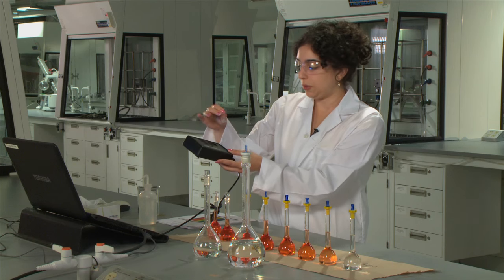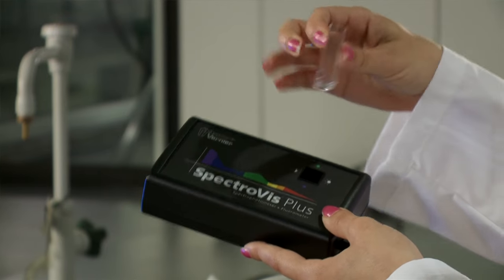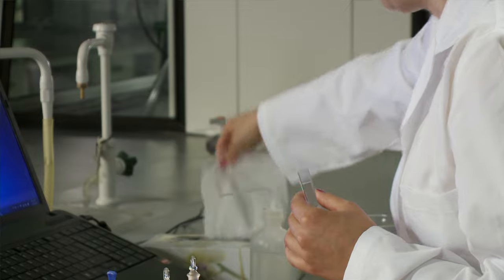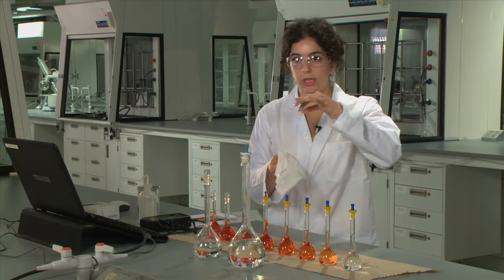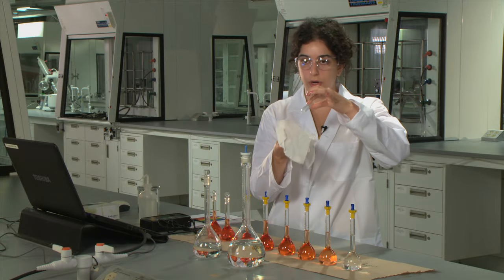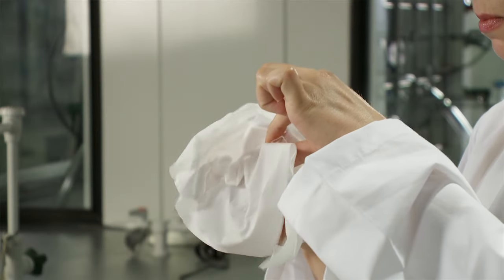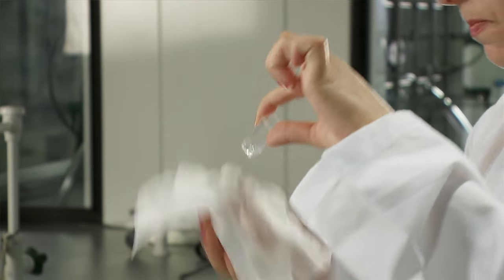When you're running measurements with the cuvette you always want to ensure that the clear sides are clean. You can do that by taking a Kimwipe and holding it by the sides of your cuvette and then just giving it a quick wipe.